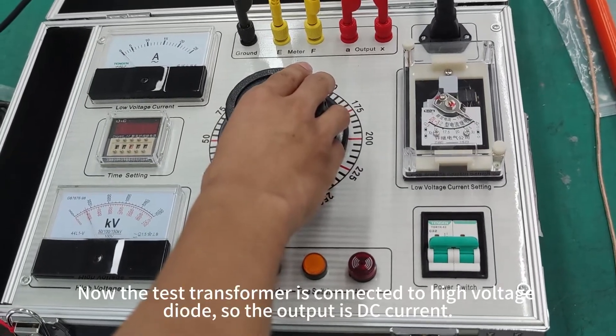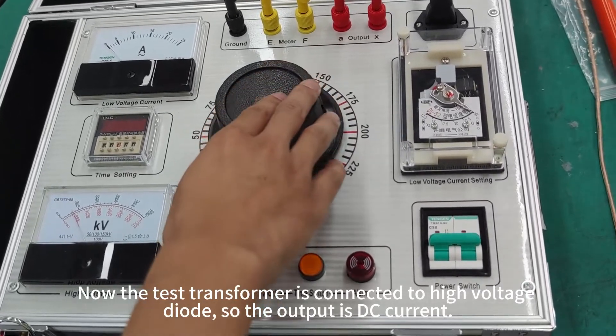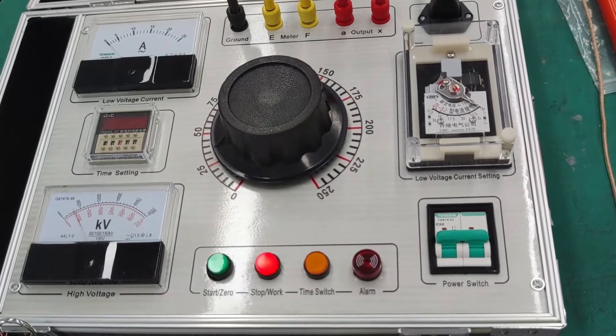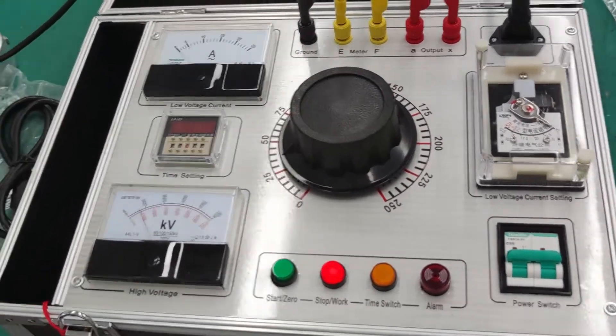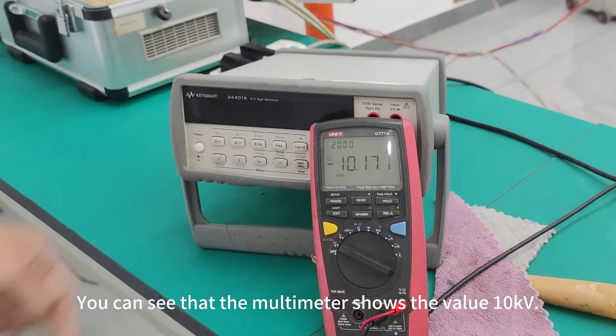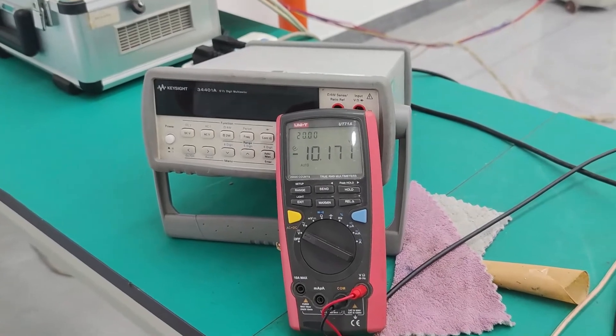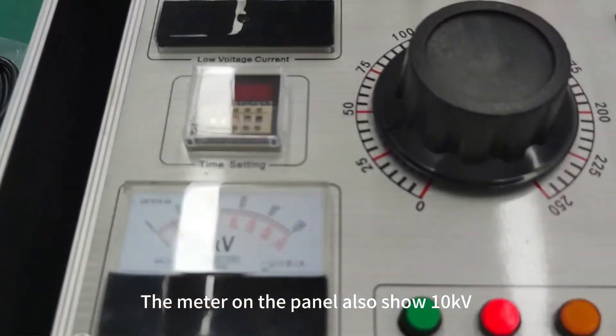Now the test transformer is connected to high voltage diode, so the output is DC current. You can see that the multimeter shows the value 10K. The meter on the panel also shows 10K.